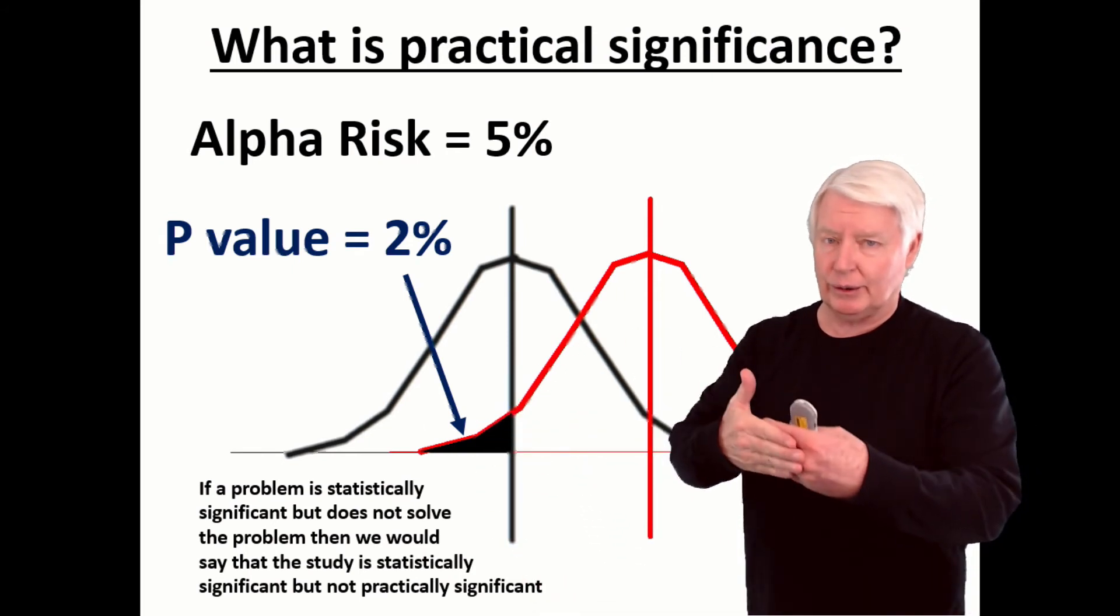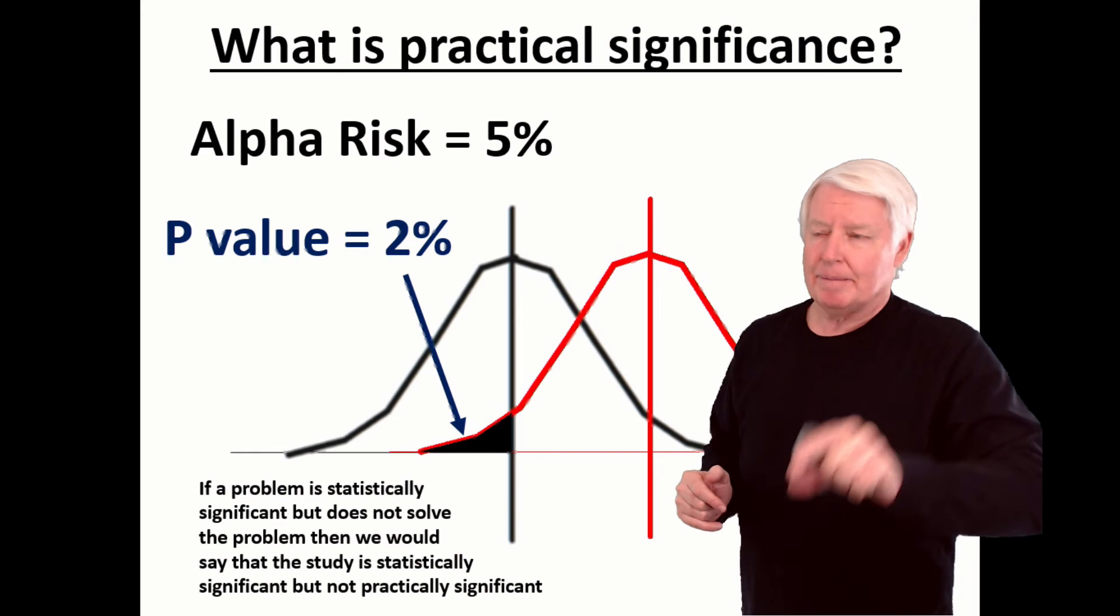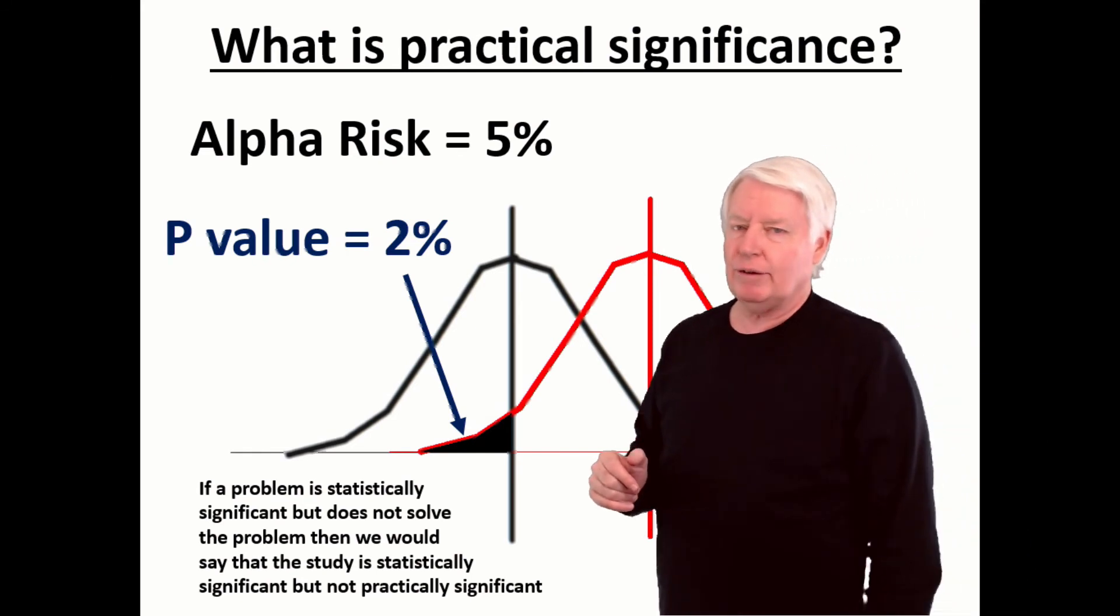And again, how do we get the two to agree with each other? By adjusting the right sample size. And in many industries, regulators especially, such as the FDA, when you do studies, they expect you to run the studies with the right sample size.